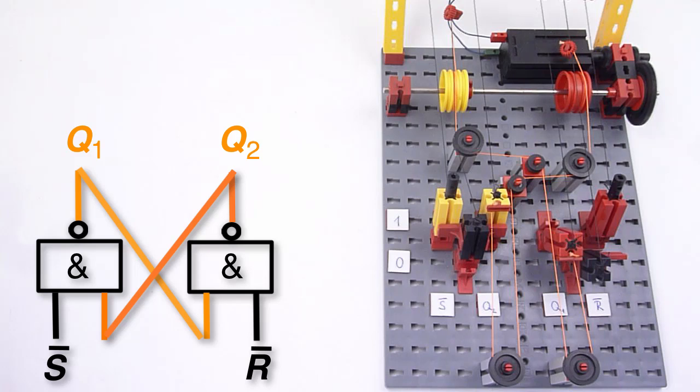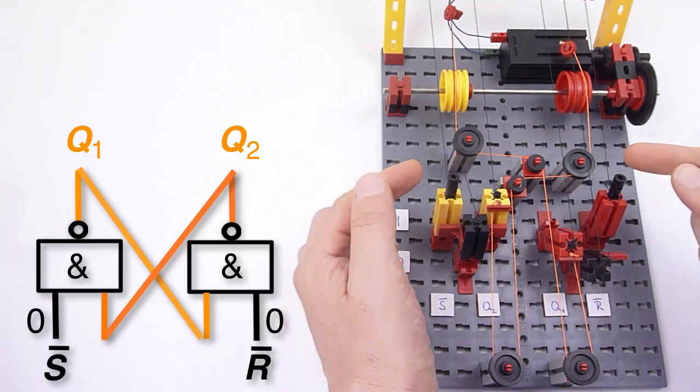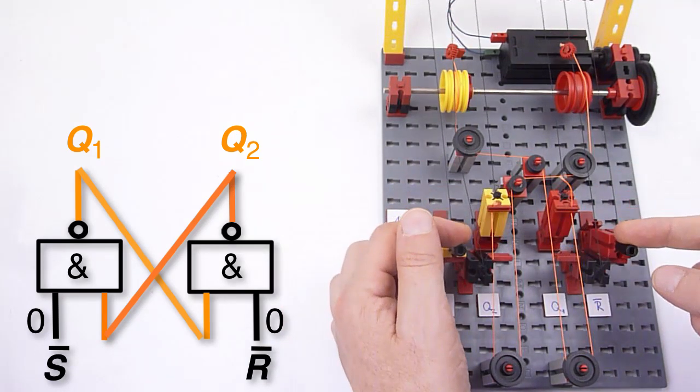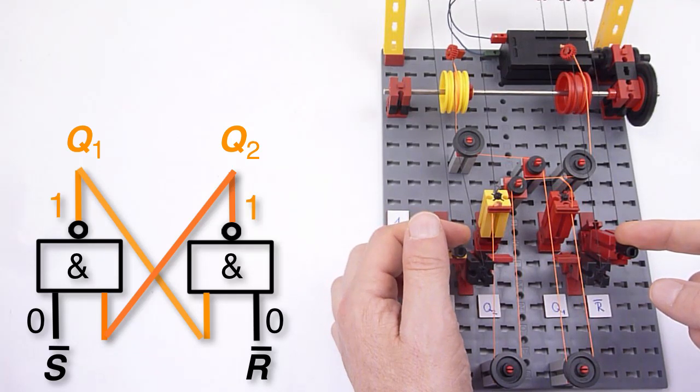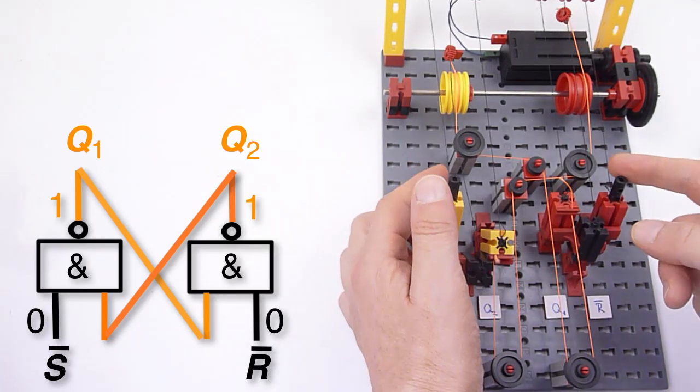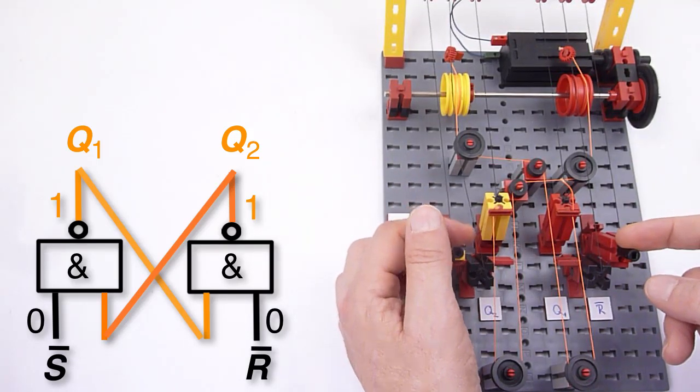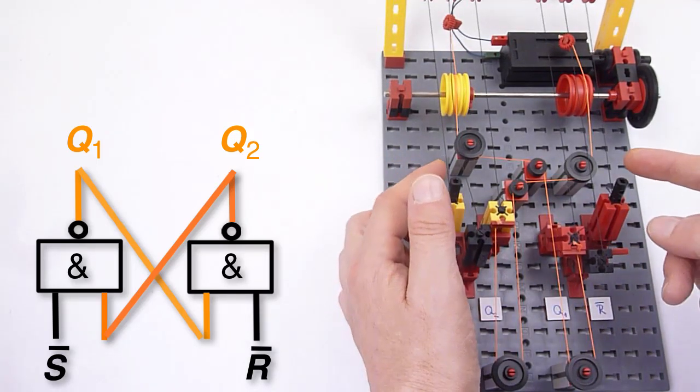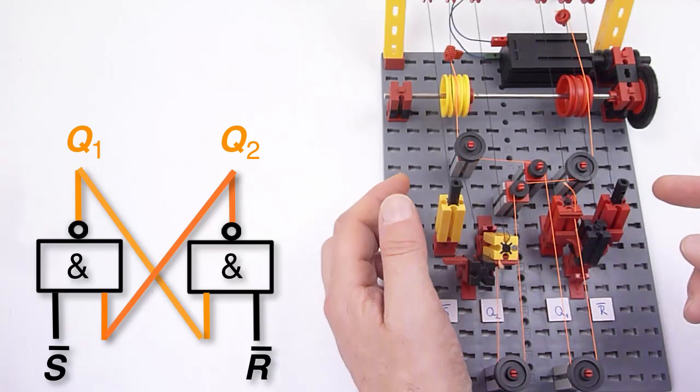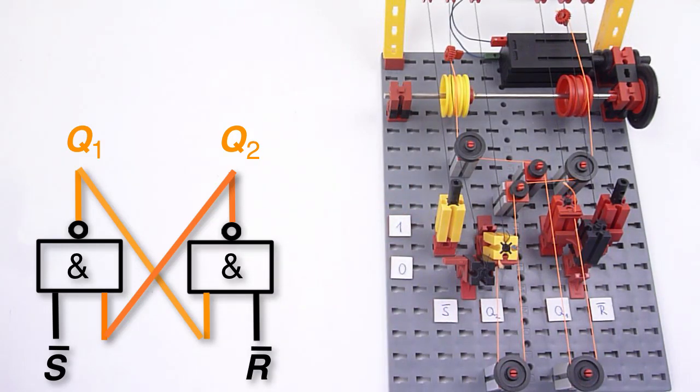What happens if you put both inputs S-bar and R-bar to zero? Of course, both outputs Q1 and Q2 become or stay one. The following state is a question of whether you release S-bar or R-bar first. The outcome might be difficult to predict if you release them almost simultaneously.